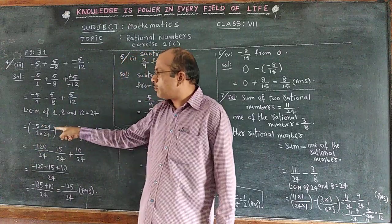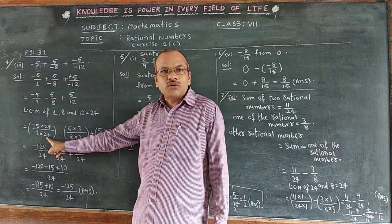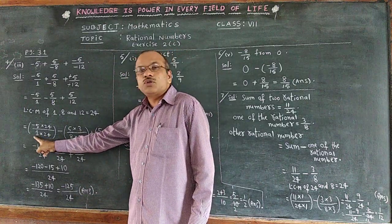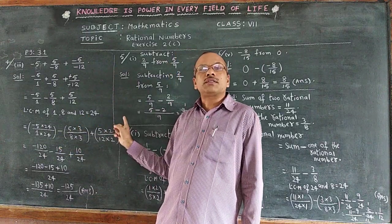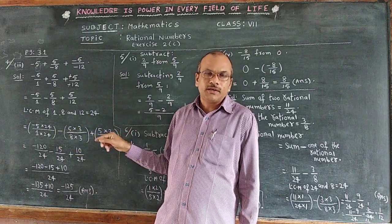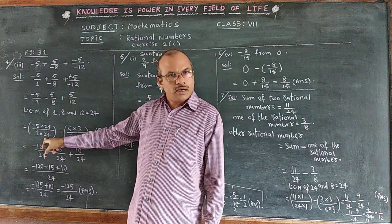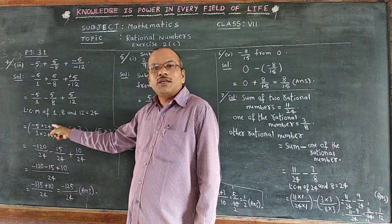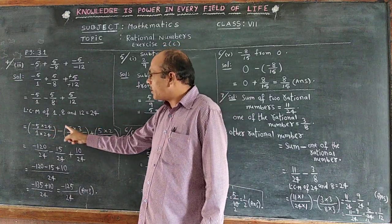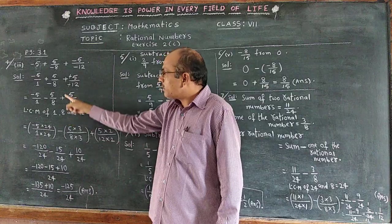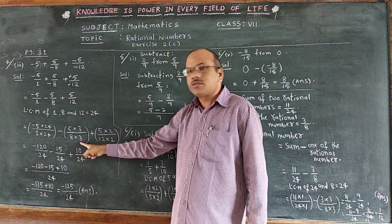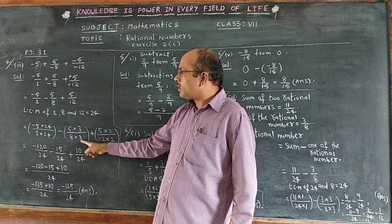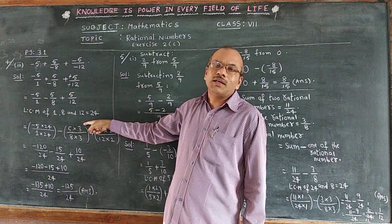For minus 5 by 1: to get 24 in the denominator, we multiply 1 by 24, so we write 24 in the numerator as well. For minus 5 by 8: since 8 times 3 is 24, we multiply by 3, so we write 3 in the numerator too. For plus 5 by 12: since 12 times 2 is 24, we multiply by 2 and write 2 in the numerator.